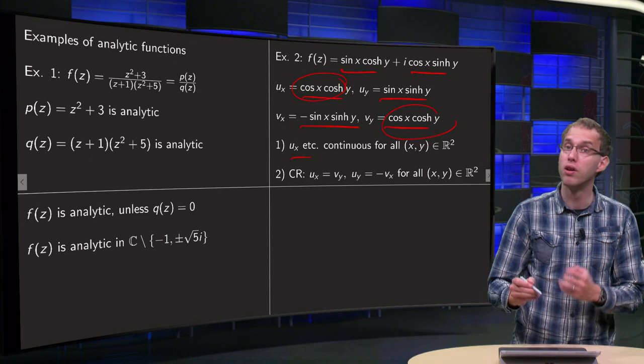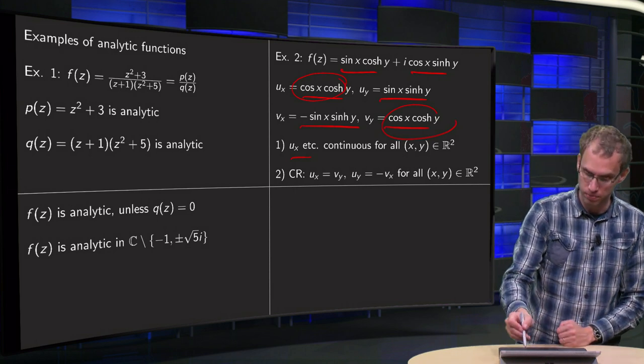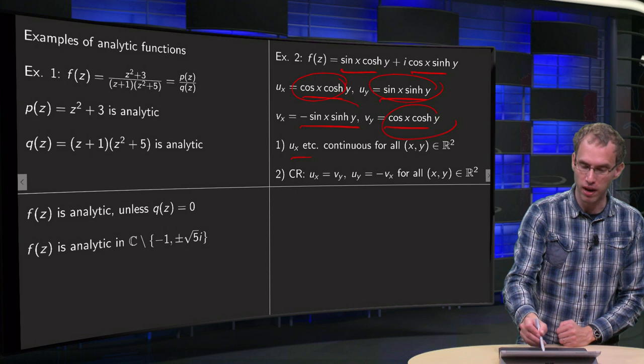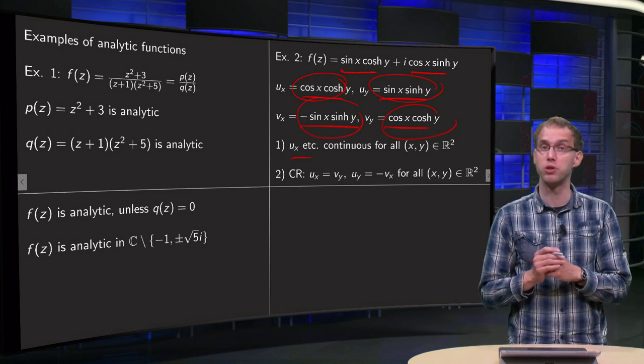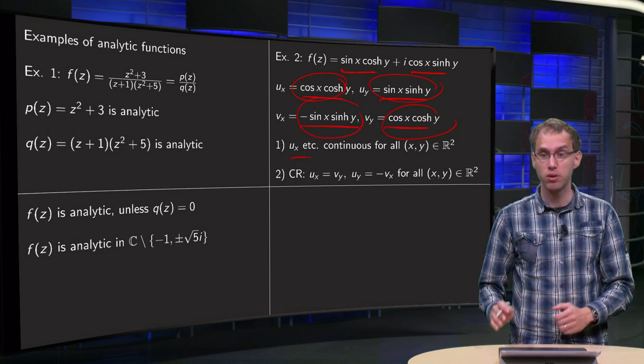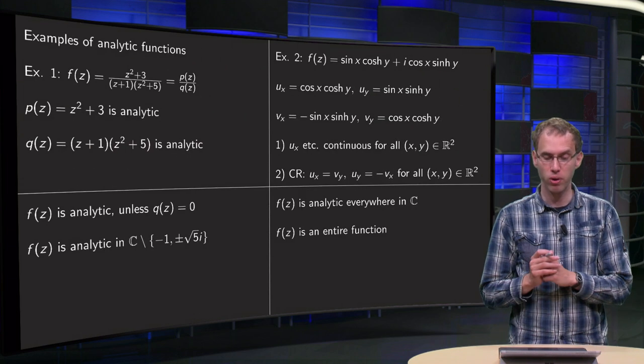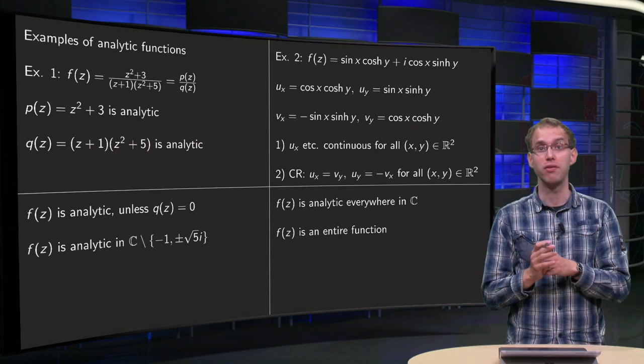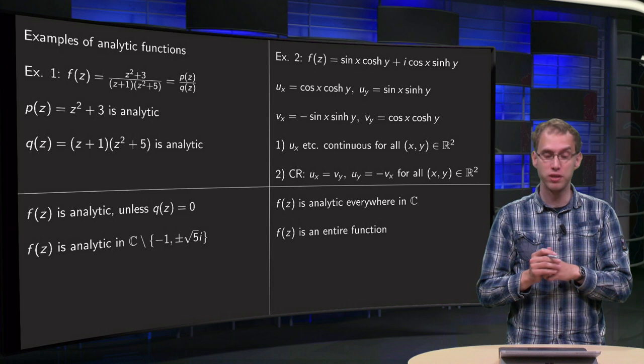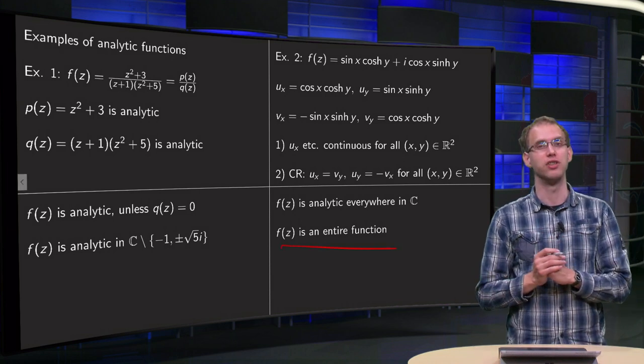And then we see Cauchy-Riemann is satisfied because ux equals vy for all x and y, and uy equals minus vx for all x and y in R2, which means that the Cauchy-Riemann equations are satisfied. So we see that f of z is analytic in all of C, which means that this f of z is an entire function.